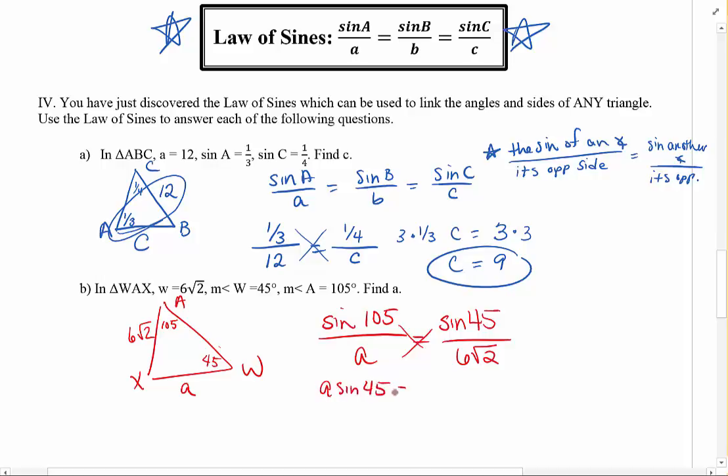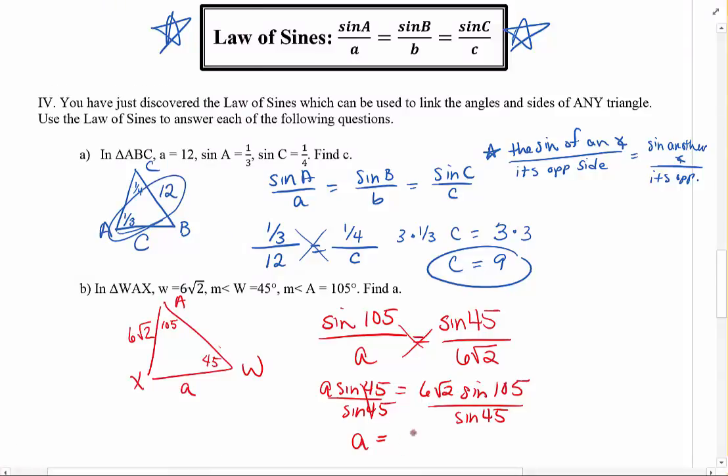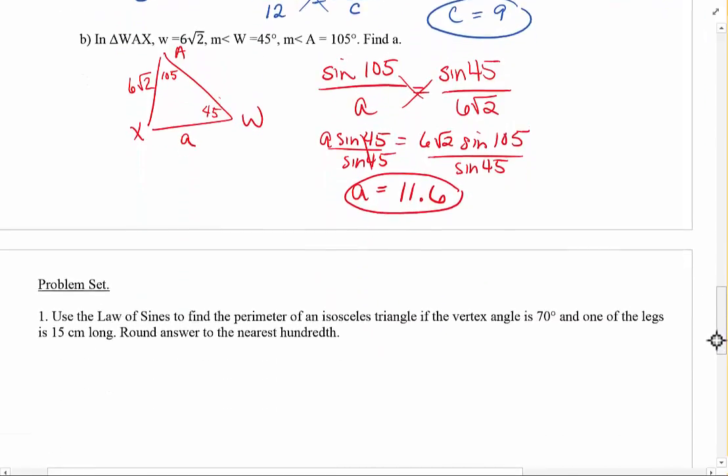So I have A sine 45 equals 6 root 2 sine 105, divided by sine 45, to solve for A. And we end up with, let's pull a calculator out here. So in the calculator, I'm going to write 6 radical 2 times the sine of 105. I'm going to remember to end my parenthesis, because now I have to divide by the sine of 45. I do all that in my calculator, and it says A is 11.5911. So I'm just going to call it 11.6 and be happy with that.